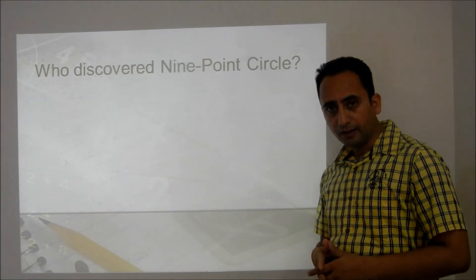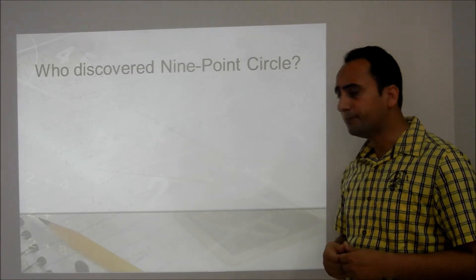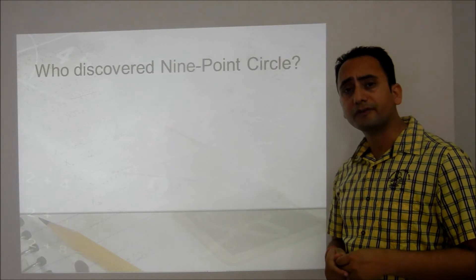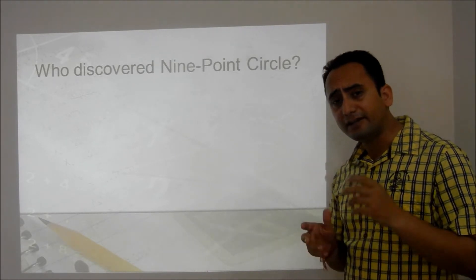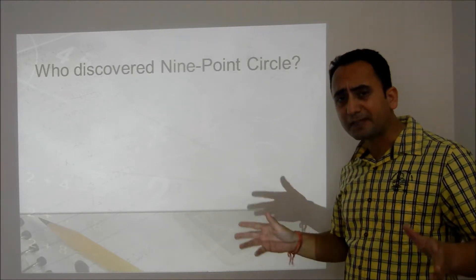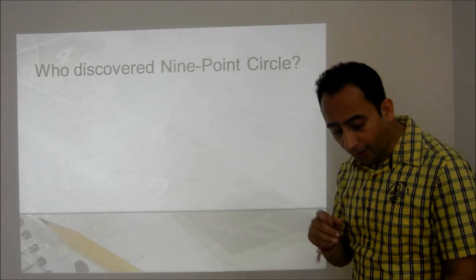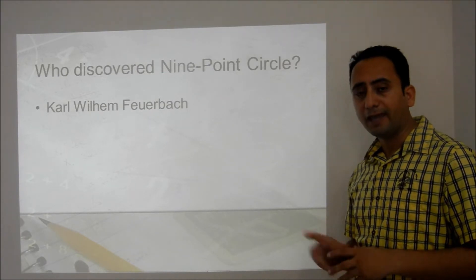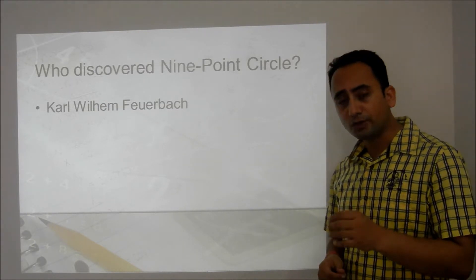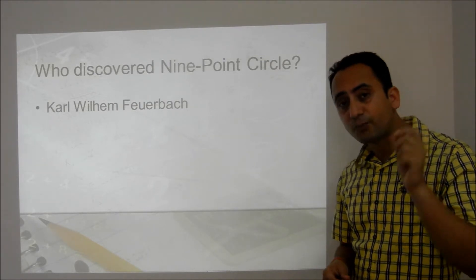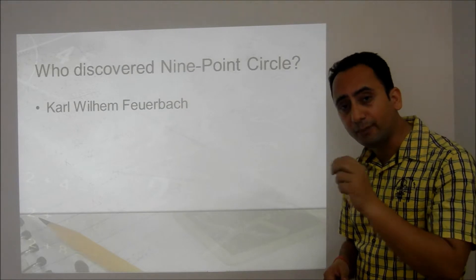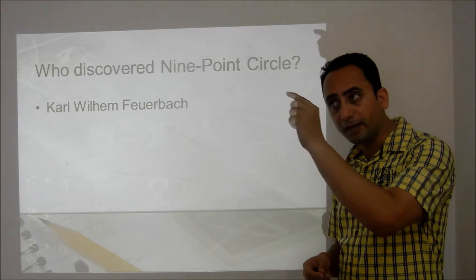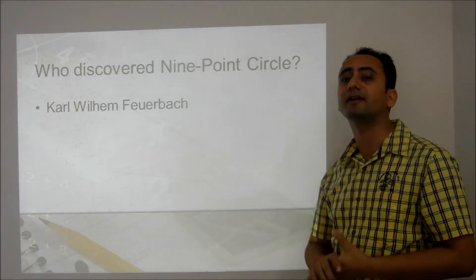Let's start with a brief history of the 9-point circle. The 9-point circle was independently discovered in the beginning of the 19th century in different countries. One of those famous mathematicians was Karl Wilhelm Feuerbach, a German mathematician. He did not actually discover the 9-point circle — he discovered a 6-point circle, missing the 3 midpoints of segments joining vertices to the orthocenter.